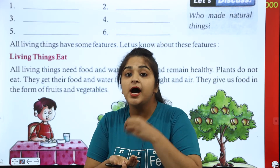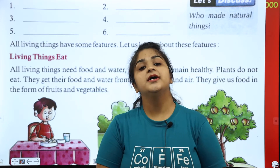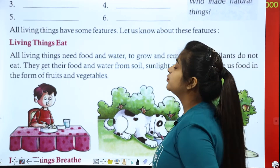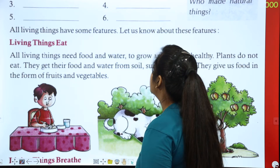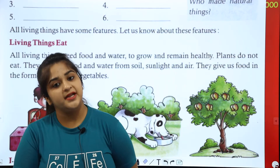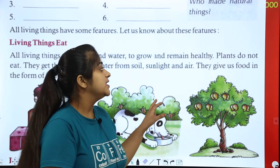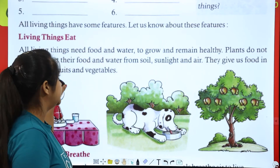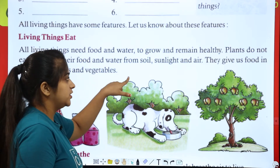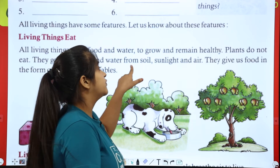Living things eat. You can eat, plants and animals also eat. All living things need food and water to grow and remain healthy. Plants do not eat, but they get their food and water from the soil.